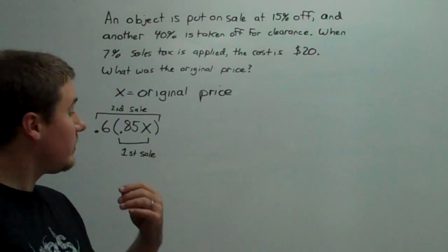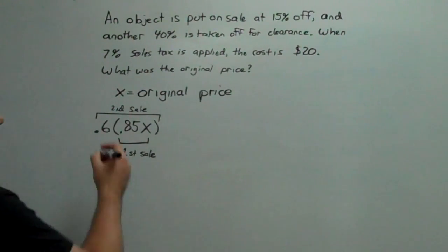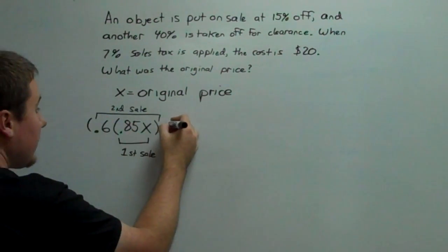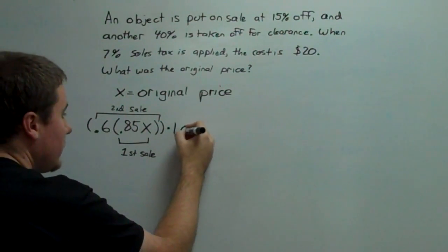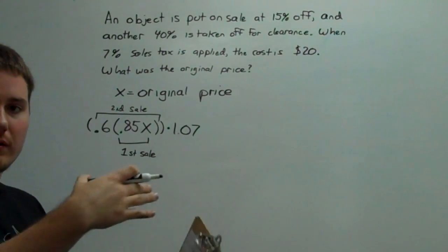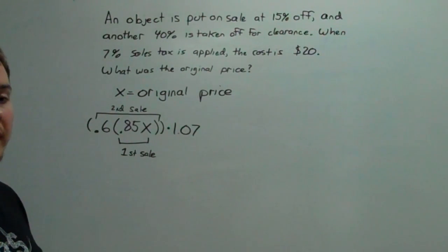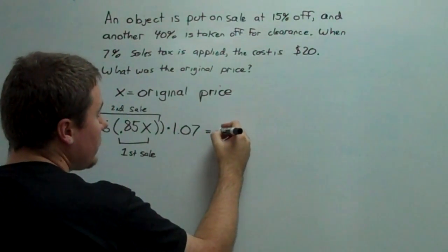Now, when I go to the cash register and I ring this up, they're going to add 7% sales tax. Now, that's on the current price. So what I do is I multiply it by a factor that will make it larger, and that's 1.07. The 1 is going to take into account the current price, and the 7 is going to be an additional 7% on top of that. And all of this equals $20.